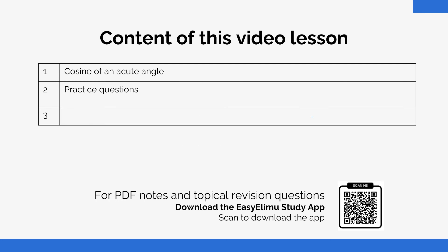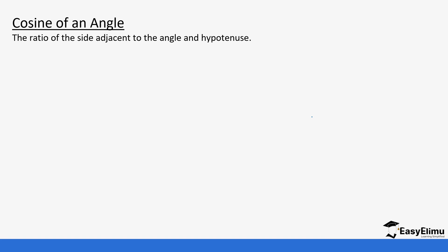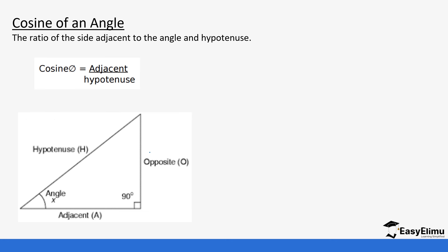We were able to derive the tangent of an acute angle and sine of an acute angle from a right-angled triangle. For today we are going to focus on how to calculate the cosine of an acute angle. The cosine of an acute angle is the ratio of the adjacent side to the hypotenuse. For sine we said it's opposite over hypotenuse; now it's going to be adjacent over hypotenuse.